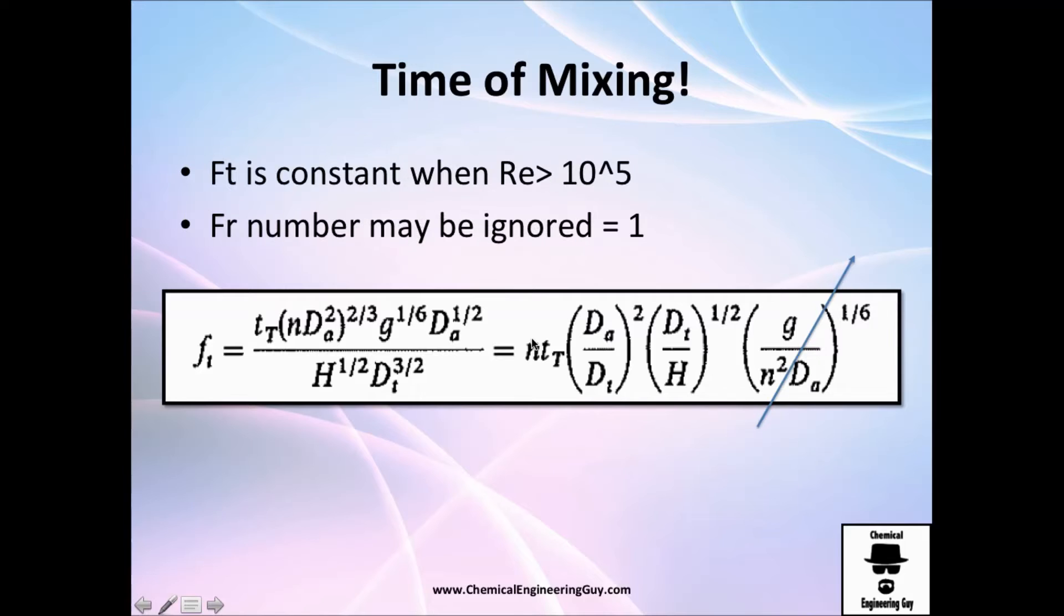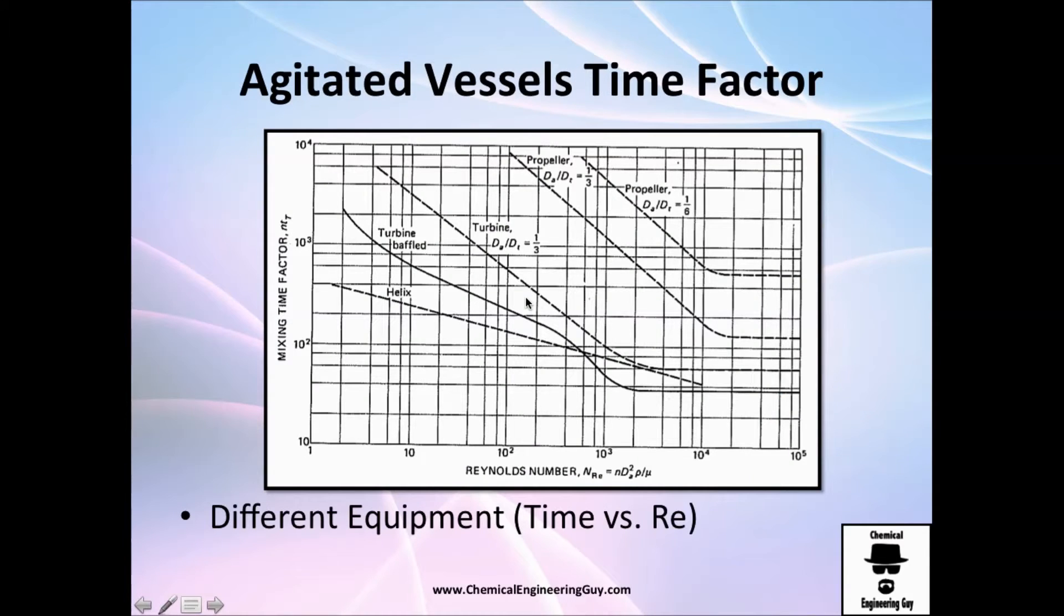So normally for Reynolds number higher than 10 to the 5, Froude number is actually very very close to 1, so you can ignore it and you will get a very easier equation of time. But this is only in turbulent cases. If you don't have turbulence, you cannot do this.